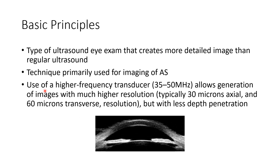In ultrasound biomicroscopy, we use a higher frequency transducer with a frequency of 35 to 50 megahertz, which allows generation of images with much higher resolution. The resolution is typically 30 microns axial and 60 microns transverse. It has less depth penetration because of the higher resolution.